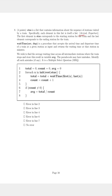So what are the elements of this list? It's arrival and departure. So let's see what the elements stand for. The first element in stations corresponds to the starting station for the train and the last element corresponds to the ending station for the train.